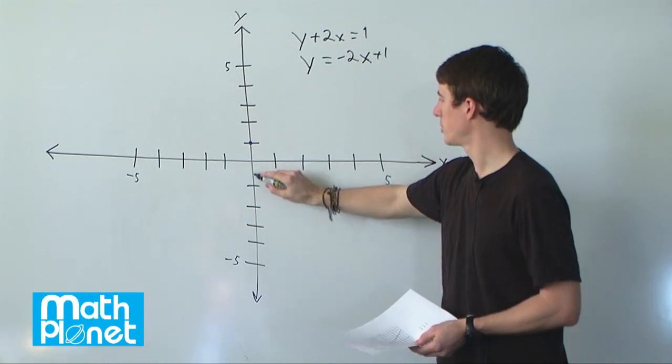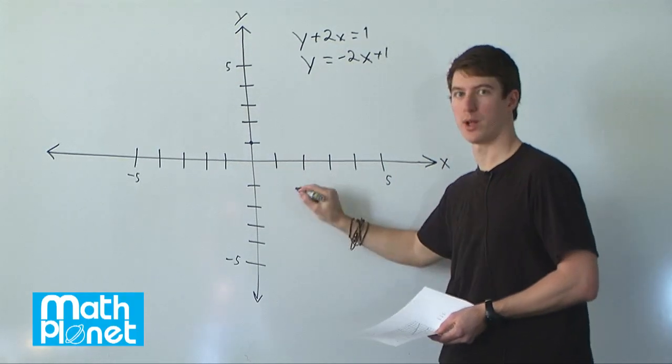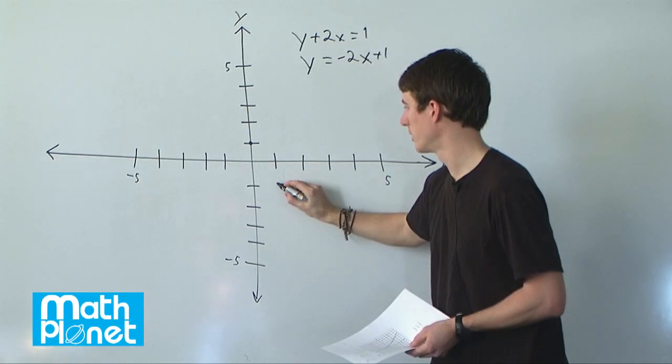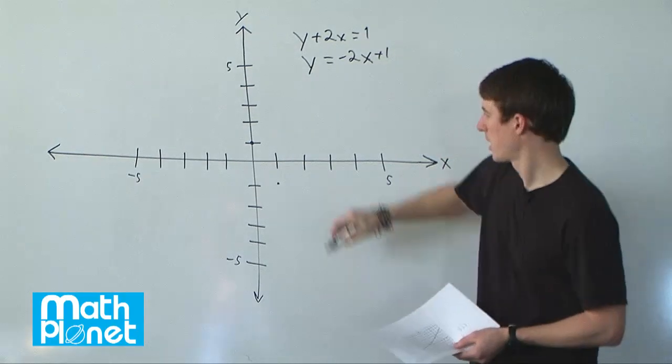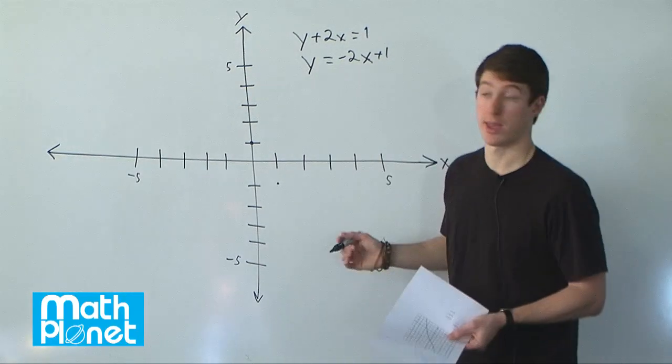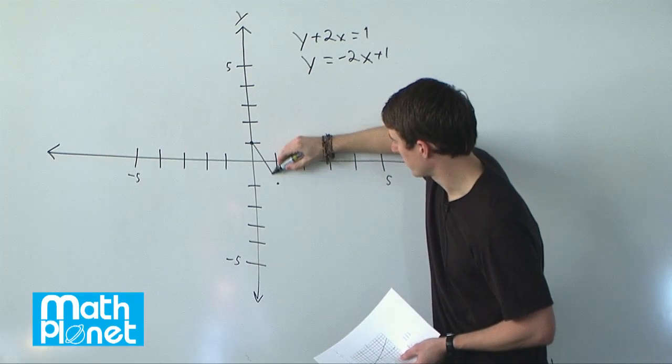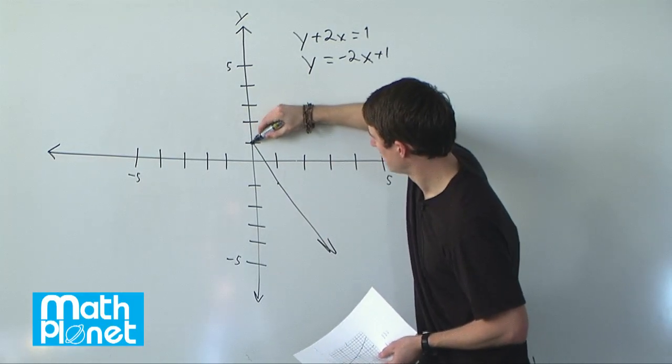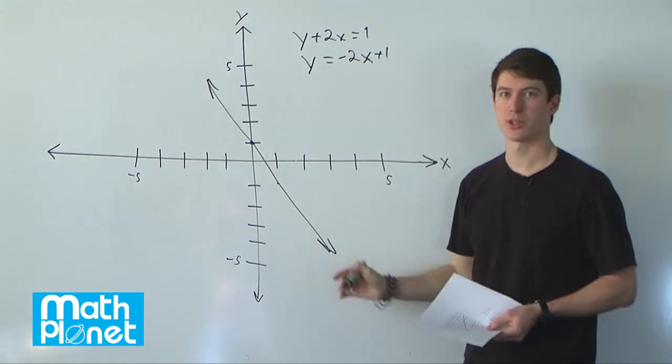So down 2, 1, 2, and to the right 1. Here we've got 2 points, and we can extend that in either direction now. If we can just connect these, we have our linear function and it's plotted.